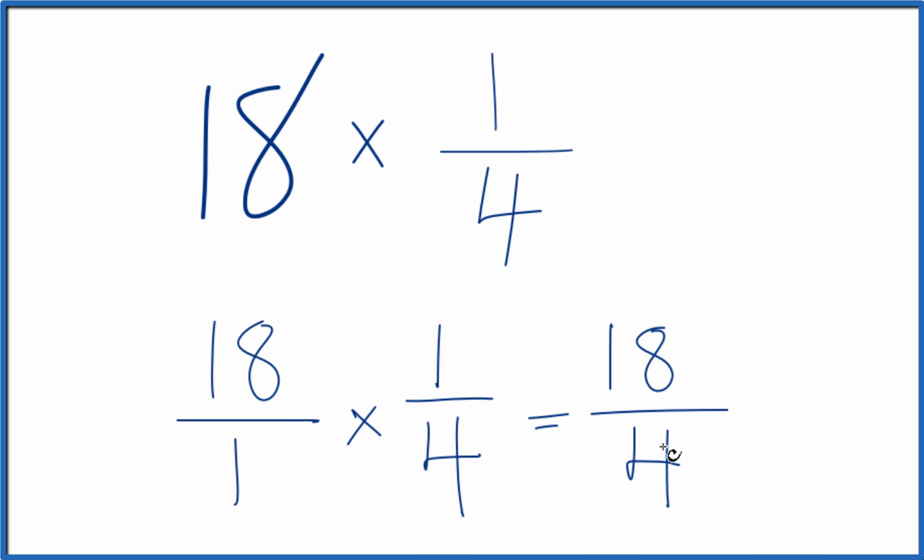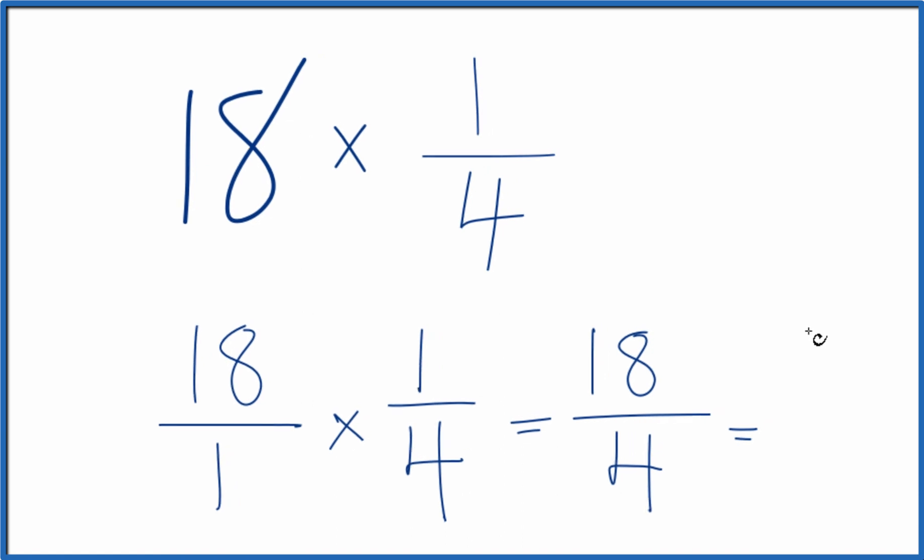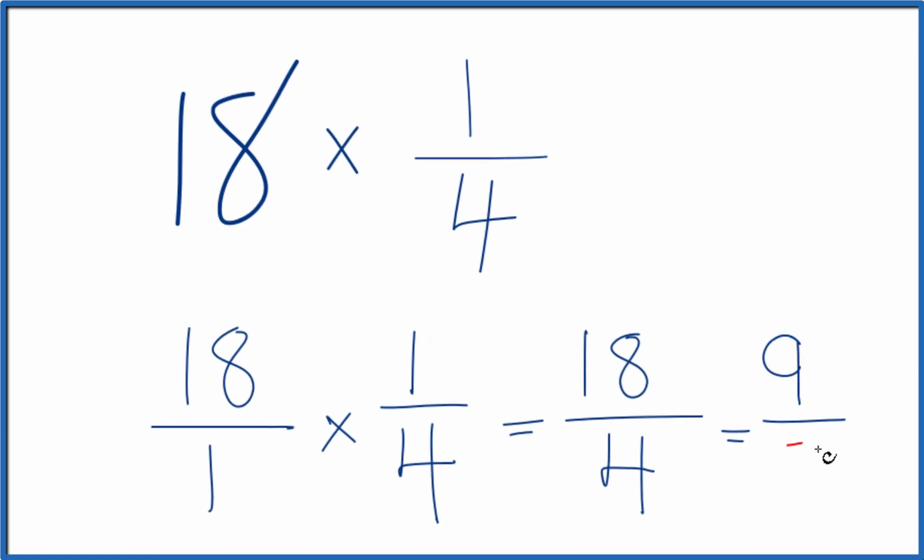And we can simplify this further. We can divide both of these by 2 since they're even numbers. 18 divided by 2 is 9. 4 divided by 2 is 2.